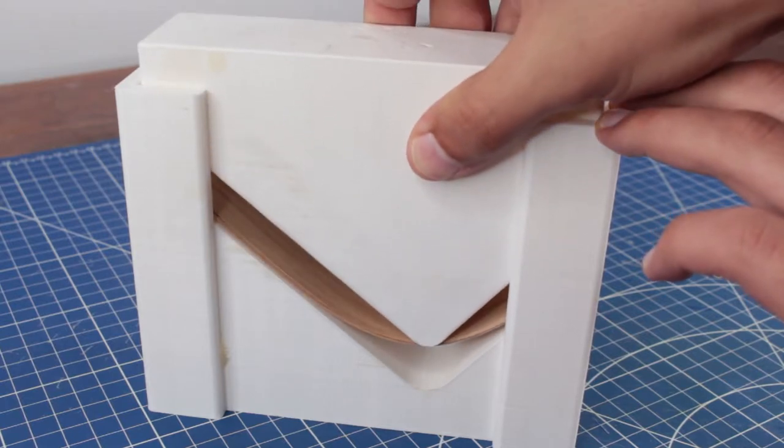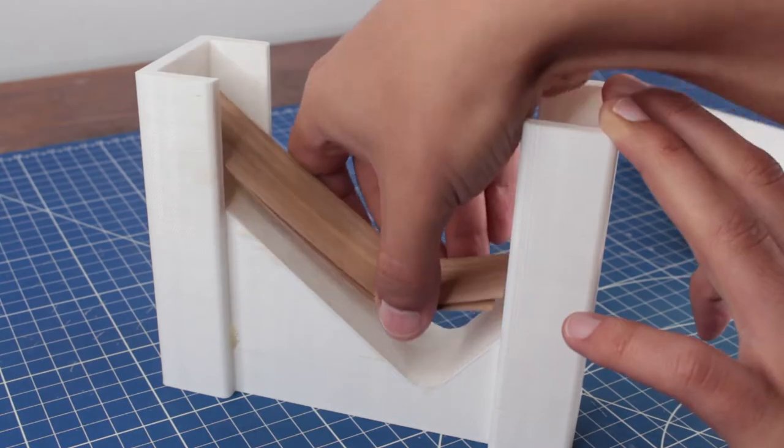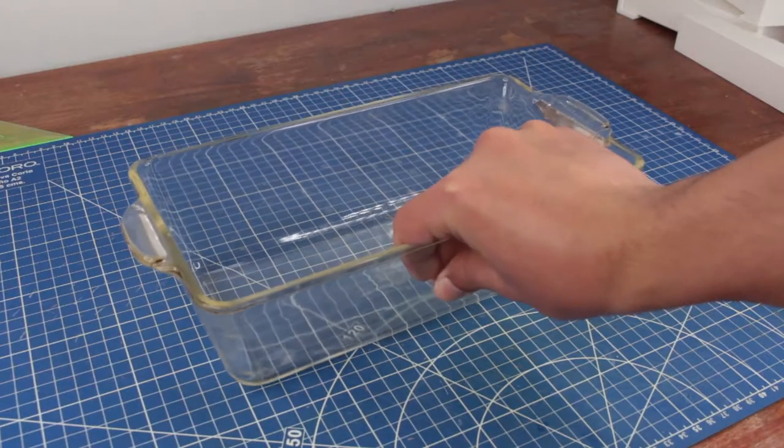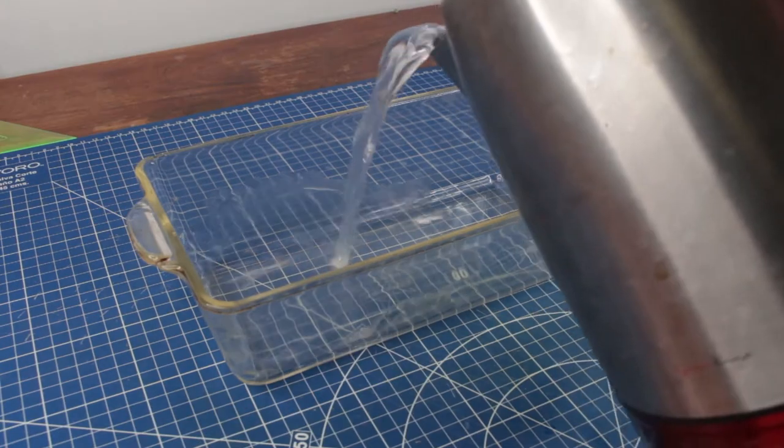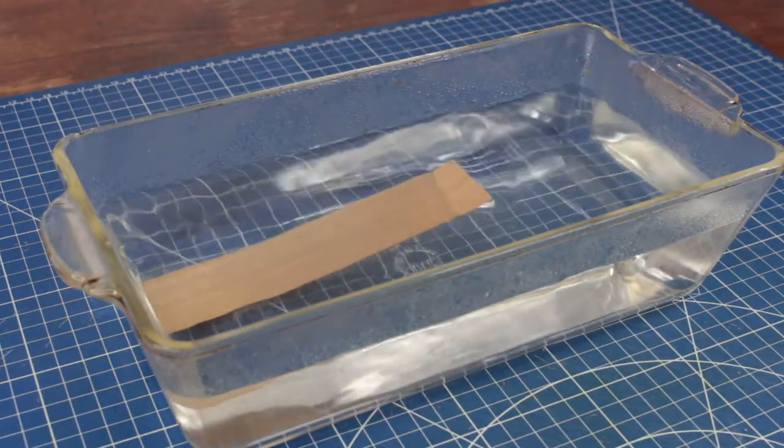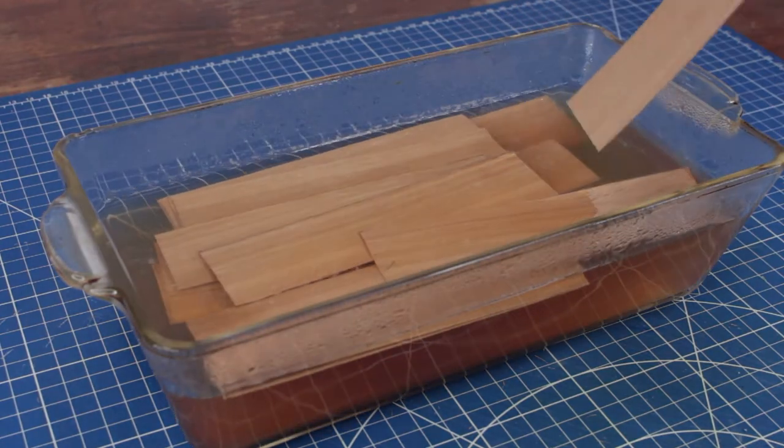So I can't just put the veneers into the mould and apply pressure because, as you can see, they break and I don't want that. So to make these pieces I will use hot water. I put each piece inside the hot water for about half an hour.